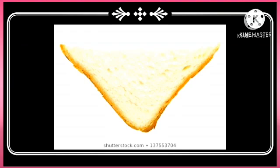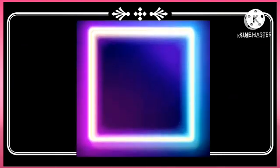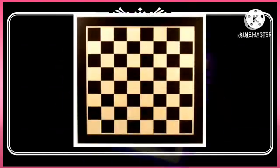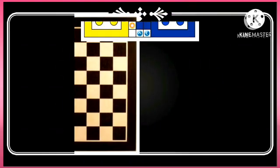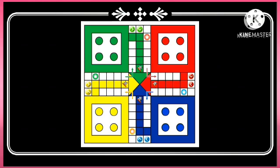Our next shape is square and objects of square shape are chess and another object is a ludo board.